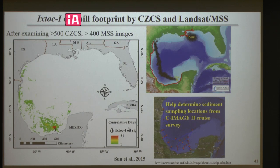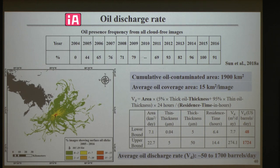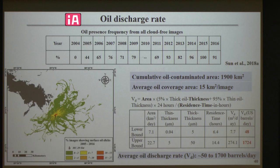Regarding the MC-20 oil spill, you estimated 1,700 barrels of oil per day — that would mean roughly the equivalent of Deepwater Horizon in about five years in terms of volume. Is that right? Yes, 1,700 barrels a day over five years is about three million barrels, which is about what the Deepwater Horizon spill was. But that is an upper bound. Even at 100 to 200 barrels per day, if you don't stop this oil leaking, it will continue for 100 years — so it's pretty much similar in total volume.